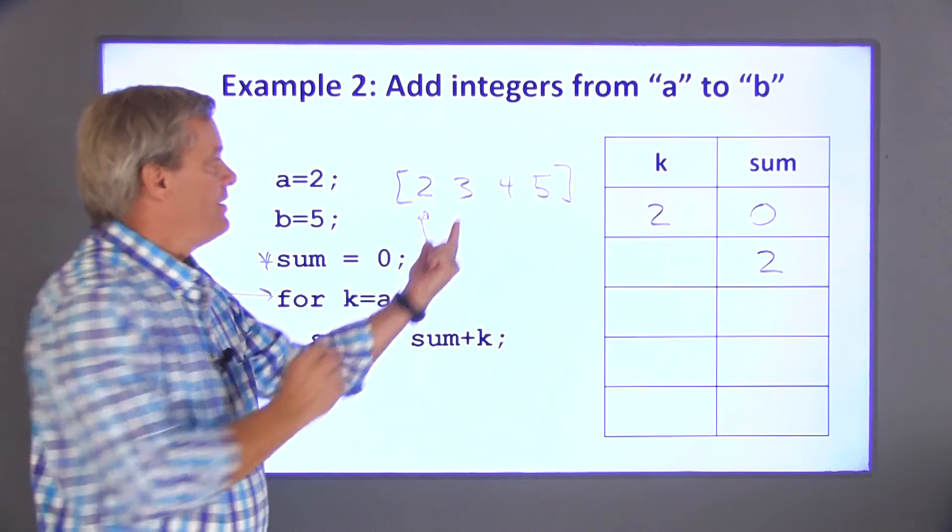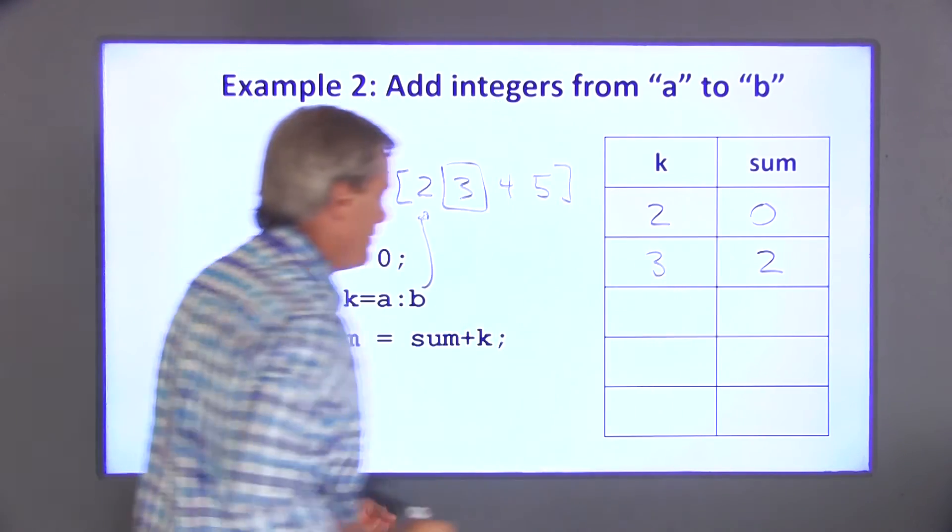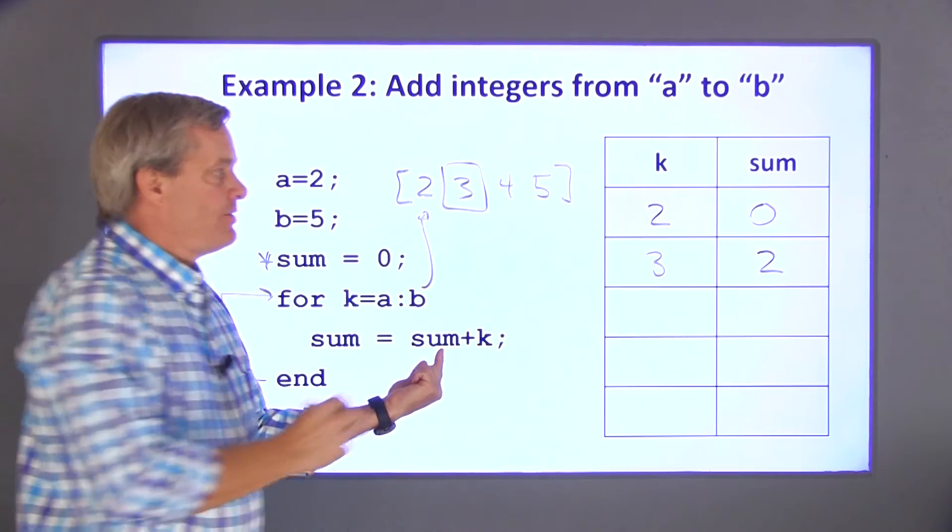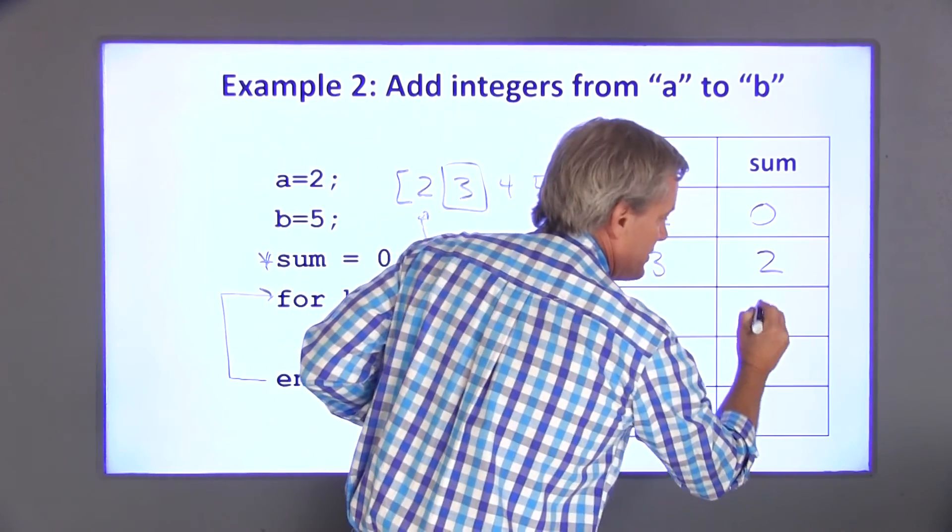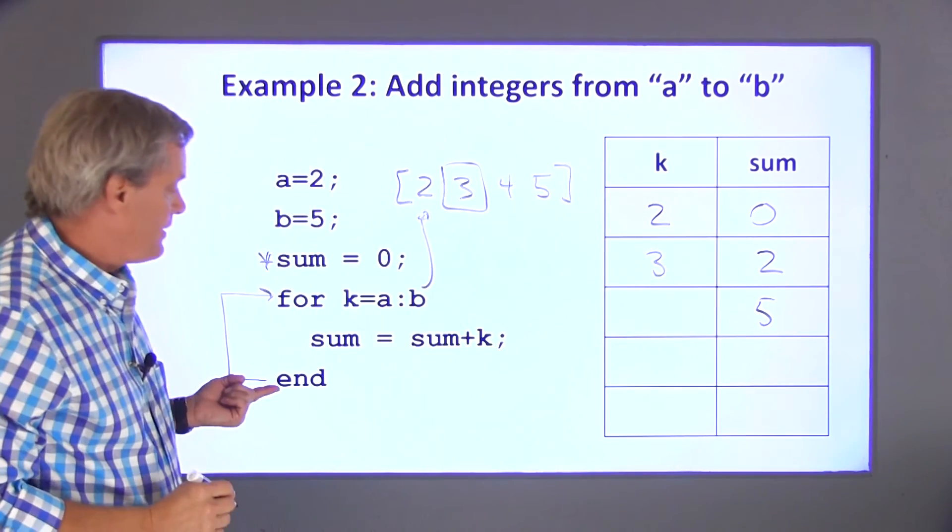k takes on the next value in the loop. k is 3. I add k to the old value of sum. 3 plus 2 is 5. Hit the end statement.